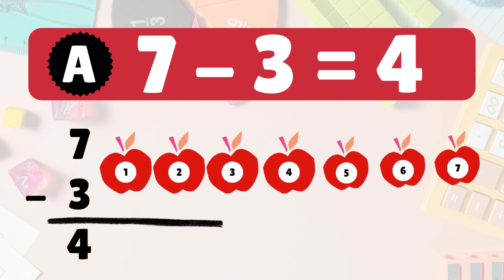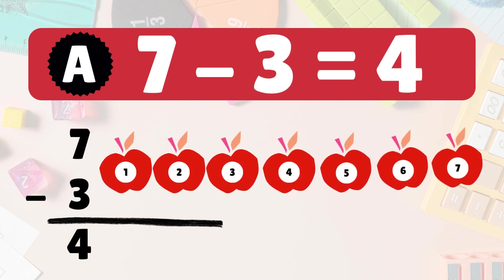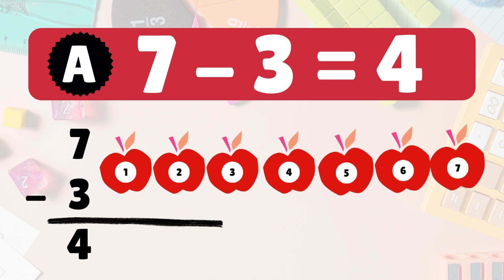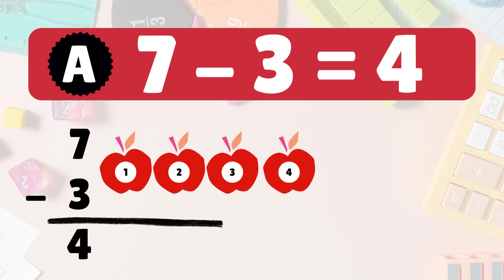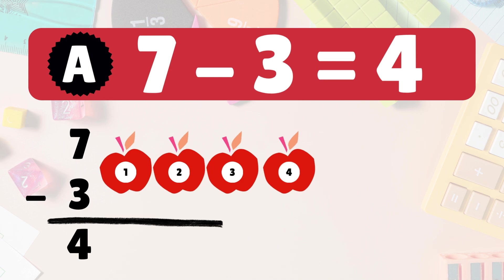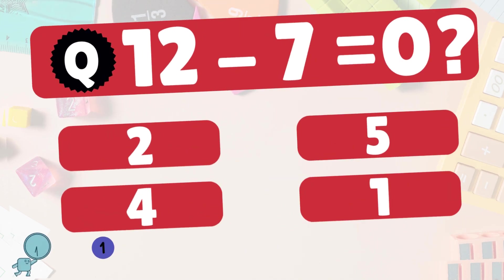7 minus 3 is 4. Here we have 7 apples. Take 3 away. 4 apples left: 1, 2, 3, 4. So 7 minus 3 is 4. High five!